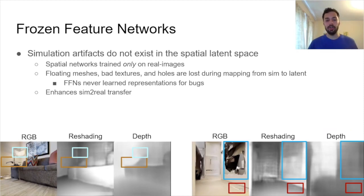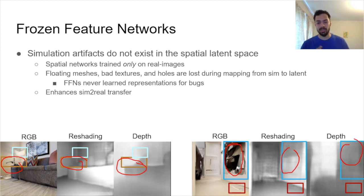The key here is that simulation artifacts don't exist in the real world spatial latent space. Our spatial networks are trained only on real images. So these things like floating meshes or bad textures are lost during this mapping from sim to latent space. You can see the doors get filled in, the textures go away, and floating meshes don't exist in the real world. The key here is that the frozen feature network simply never learned to represent these sort of buggy, unrealistic images. And so this helps to enhance the sim-to-real transfer.